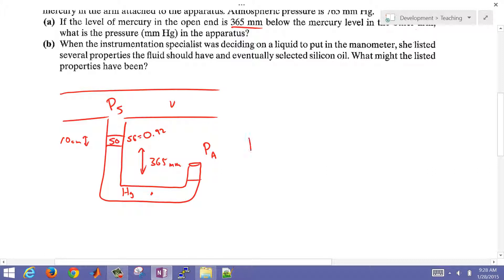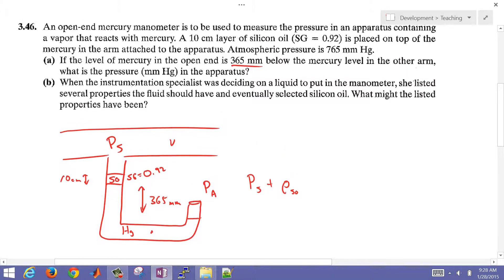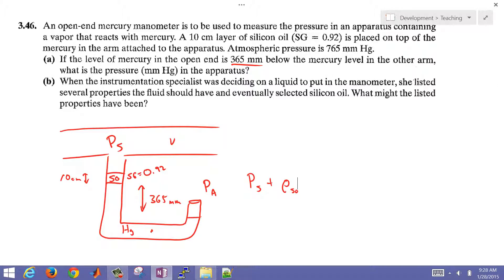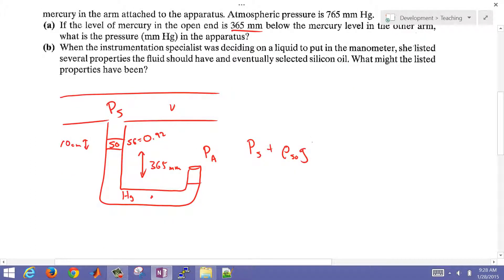I'm going to have pressure of our system plus rho of the silicon oil, and then gravity times the height of our silicon oil. Then I'm going to also have the difference in the mercury height, rho mercury times g times h mercury. That's going to be the difference of this 365 millimeters. And then that's going to equal the pressure of the atmosphere.